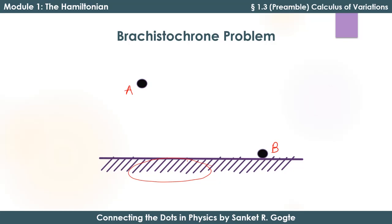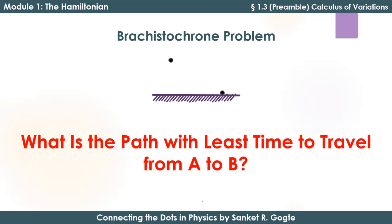The problem is this: suppose these two points, point A and point B, are to be connected by some path such that a body moves under gravity from point A to point B. What should be the path such that the body moves from point A to point B in the least time under the influence of gravity — no external force except gravitation — in the least time?